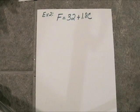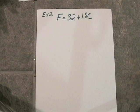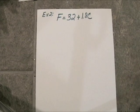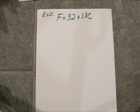Let's take a look at another example. Here we have the famous Fahrenheit to Celsius conversion equation. Fahrenheit is equal to 32 degrees plus 1.8 times the Celsius degrees.